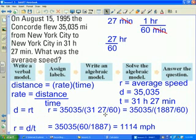That mixed number I'm going to convert to an improper fraction, becomes 1887 over 60 as an improper fraction. And then dividing by a fraction is the same as multiplying by the reciprocal, so 35,035 divided by 1887 over 60 is equivalent to 35,035 times the reciprocal, times 60 over 1887. Final solution is 1,114 miles per hour.